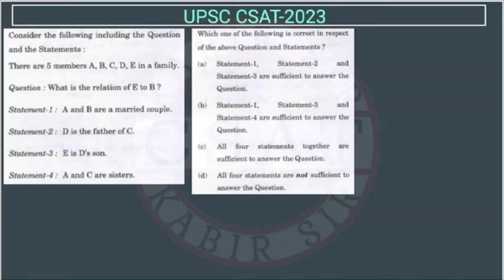Now, let us see this question. This question is from blood relation. Consider the following question and statement. There are five members A, B, C, D, E in a family. We have to find what is the relation between E and B, which makes a relation — we have to find.